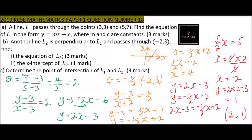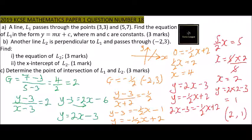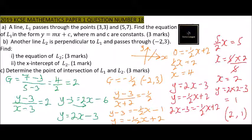That's how you complete that question, and by the end you should be able to earn 10 marks. This topic — gradients and equations of straight lines — is covered in Form Two. You should know the conditions for lines being parallel and perpendicular.